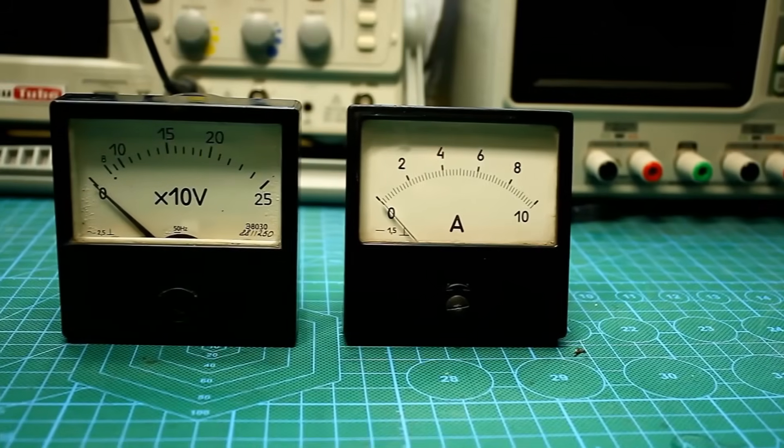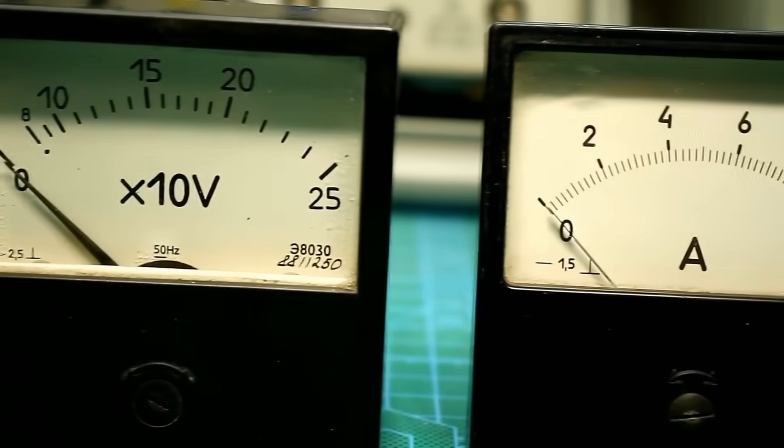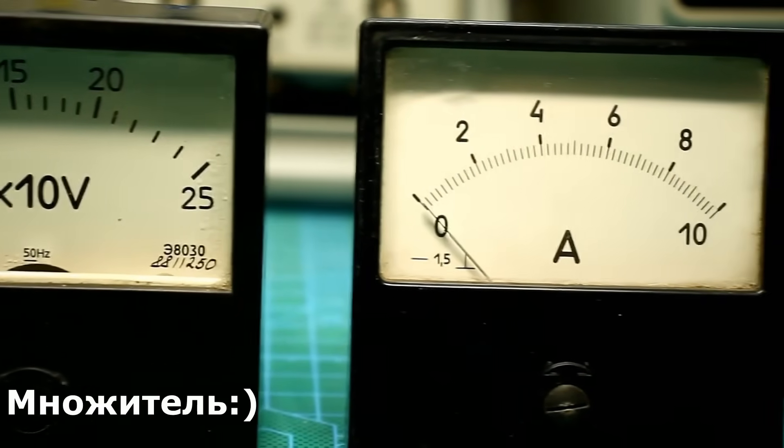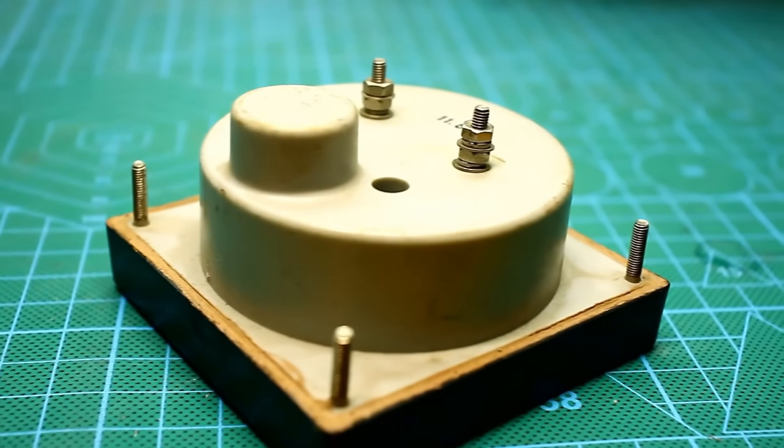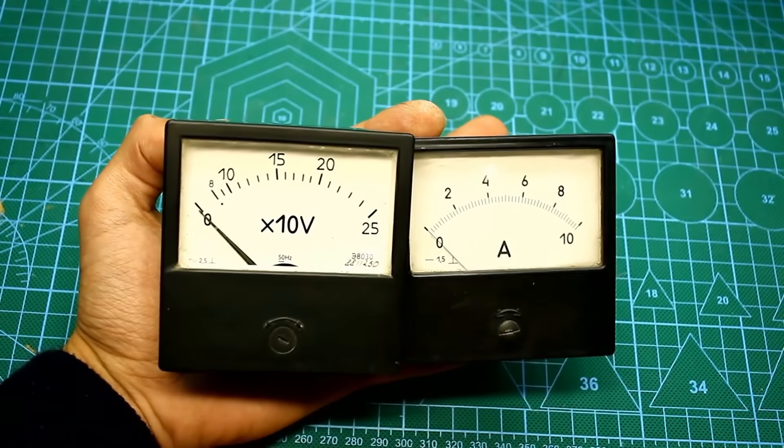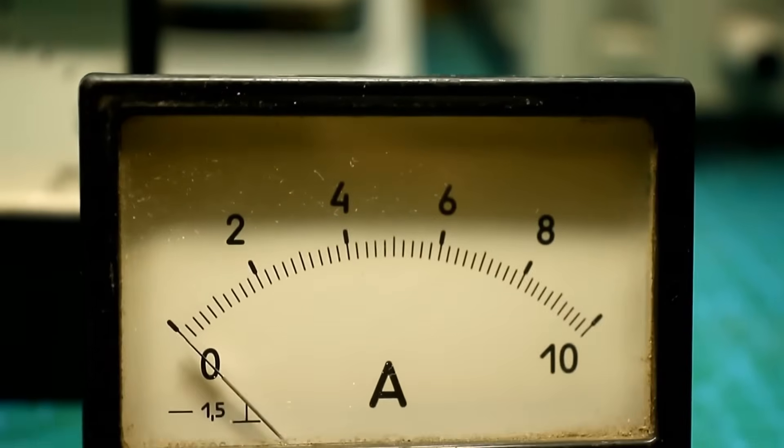Next, a couple of analog meter heads. A DC ammeter for 10A and a voltmeter for 25V x10, which means 250V. I have always valued analog instruments. This time, I was looking for a voltmeter and a DC ammeter that were the same size and appearance for an old-school power supply. And I found them.